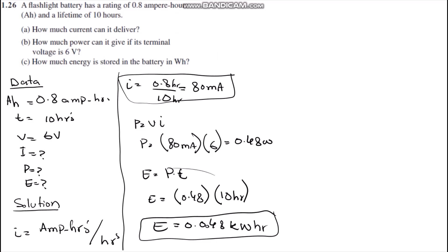Hello everyone, today we are going to solve question number 1.26. The question is: a flashlight battery has a rating of 0.8 ampere-hours. The ampere-hour is the unit of charge. We know that q equals i times t. We have got the formula from i equals q over t.